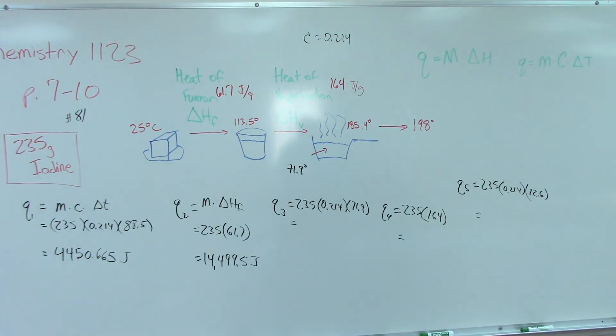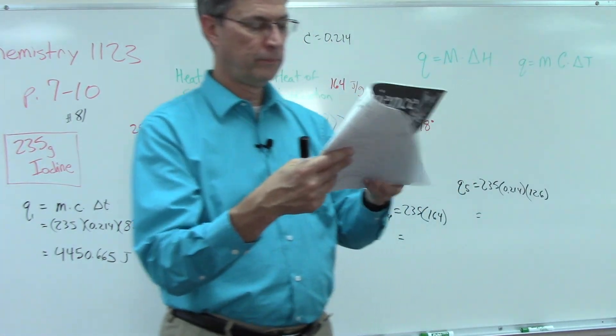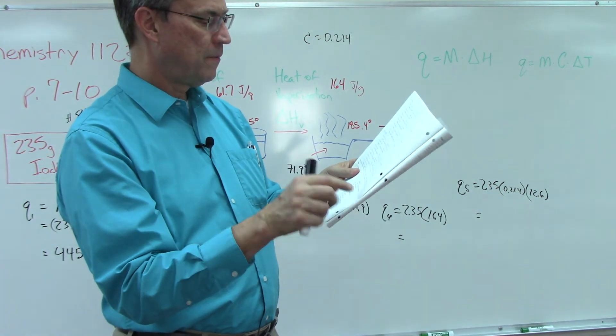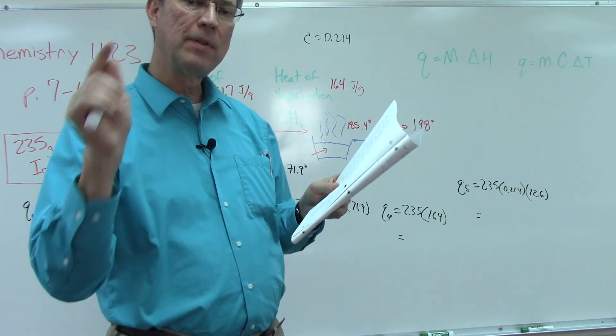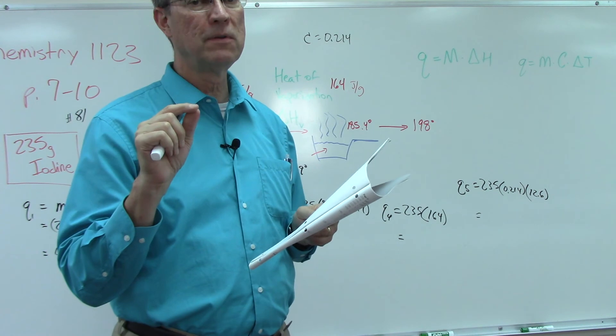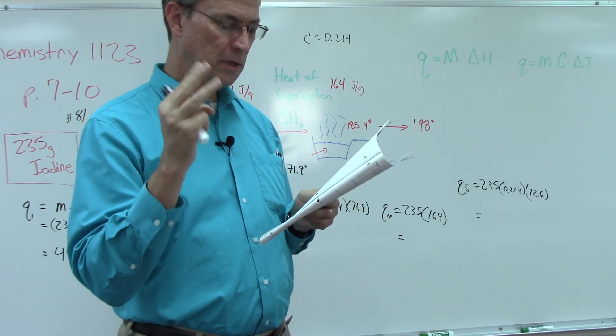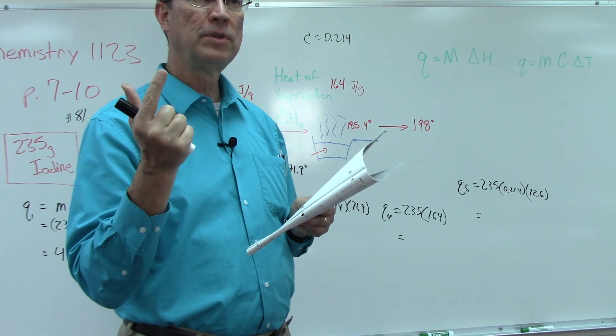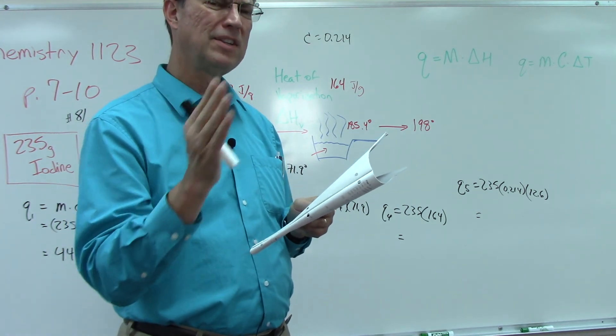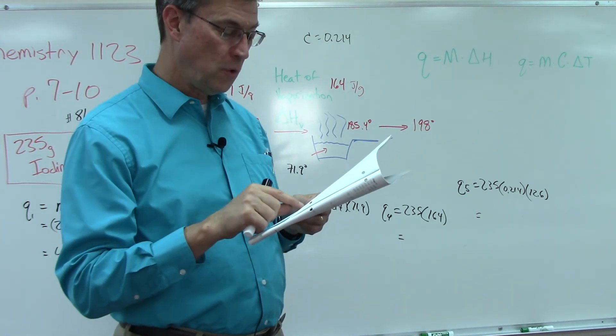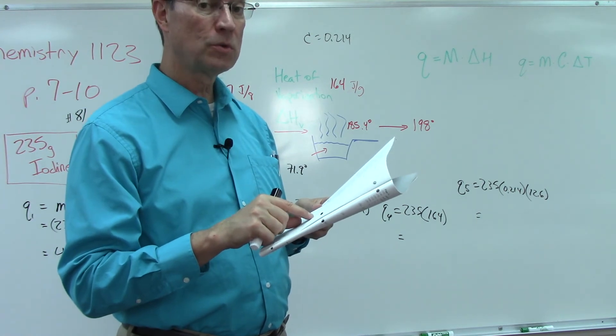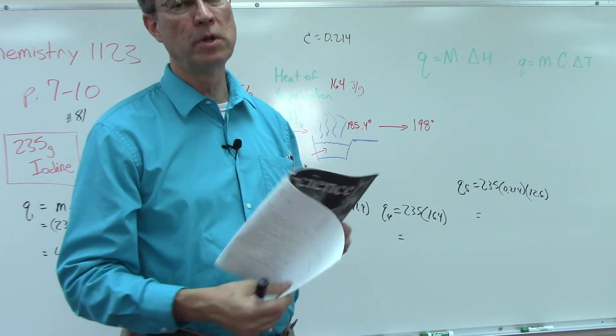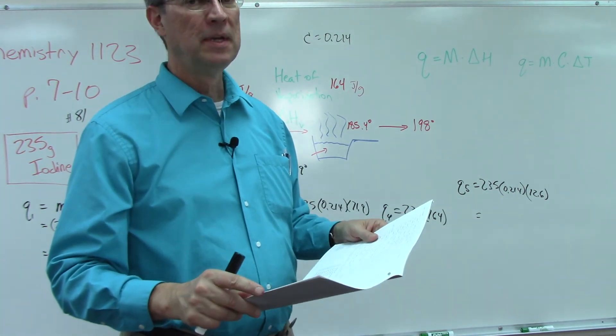I always tell my students, if you get to the last step, they always round it based on significant figures. So they rounded to having three significant figures in the ten thousands, thousands, and hundreds place, and then the last two digits are zeros.